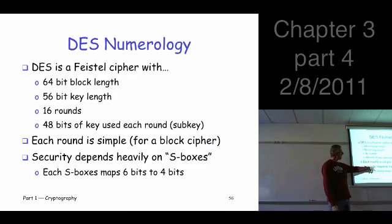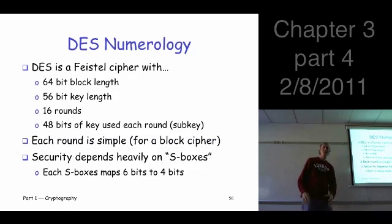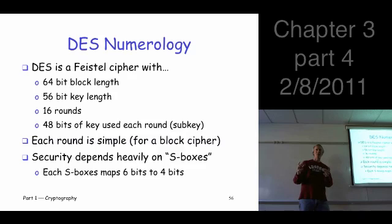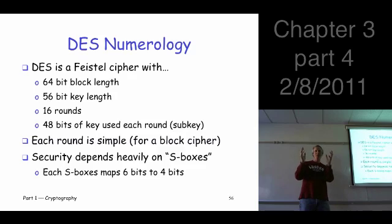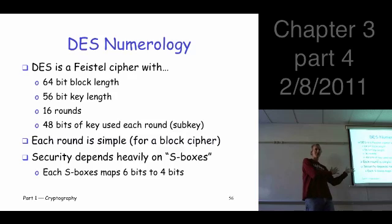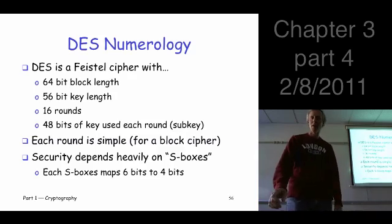The security — and the subtle changes NSA made — comes in the form of these so-called S-boxes, or substitution boxes, which are really just lookup tables. They take six bits as input and produce four bits as output. There are eight of these specified in DES.